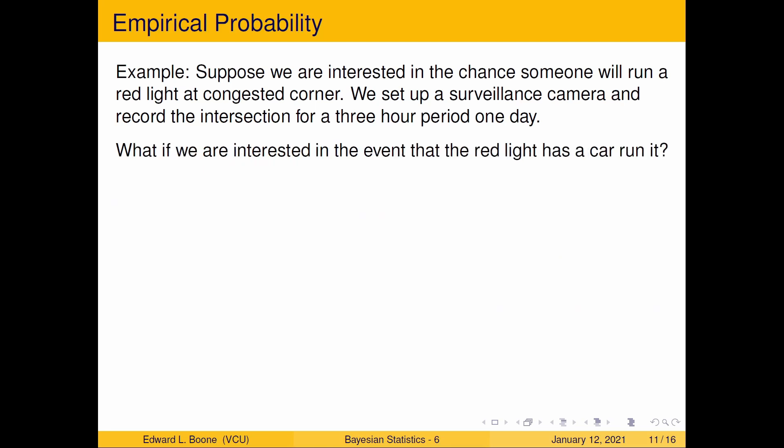Now, suppose we changed our event to be that a red light was run, not how many cars ran it, but each red light, how many of those were run. We got this off of our video. So here we've got P-hat, the hat on the top means it's estimated. The light cycle has a car run the red light. Well, there was four times that that occurred out of the 90 times we looked, and this is approximately 0.044.